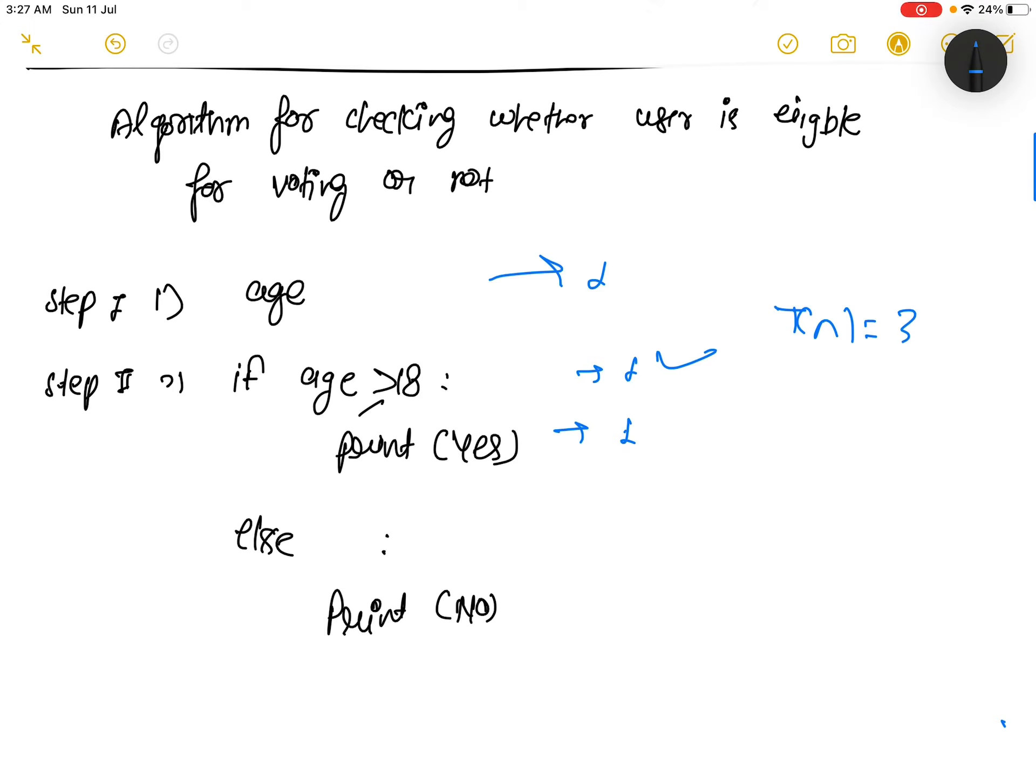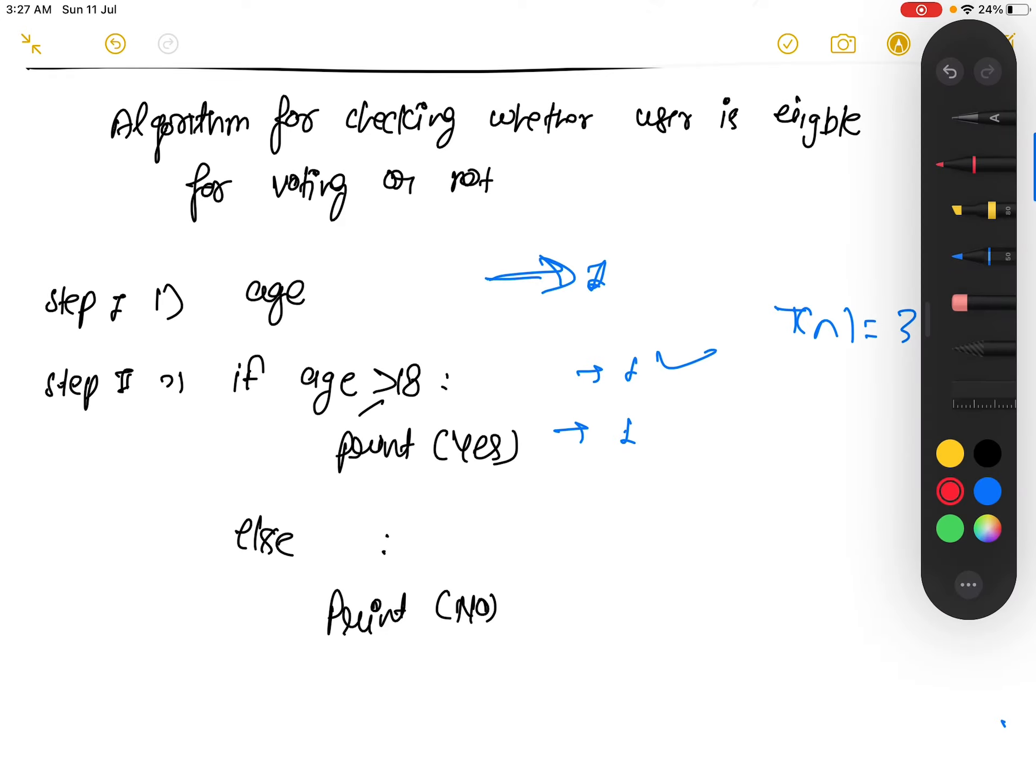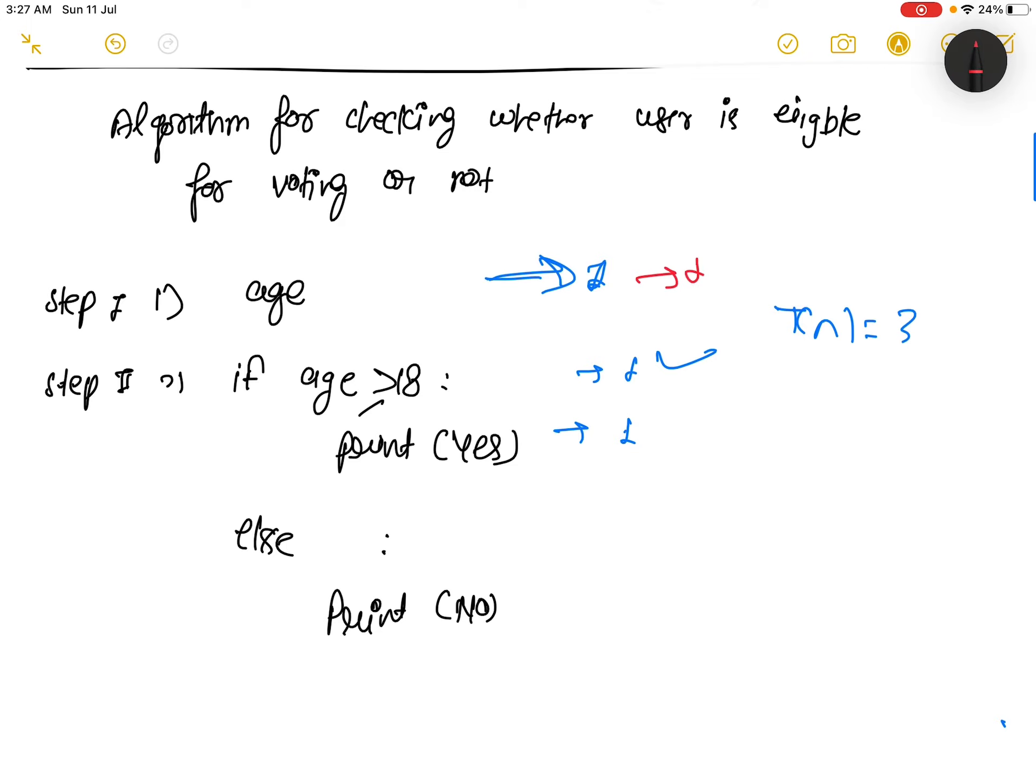Let me change the color. So this will execute one time, and this will also execute for checking whether this condition is true or not. Plus one time. If this is not true, control will go to the else part.